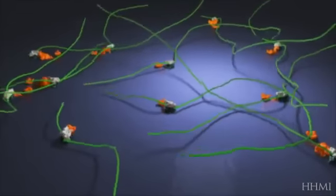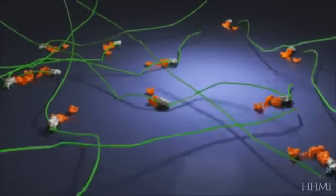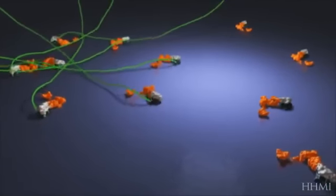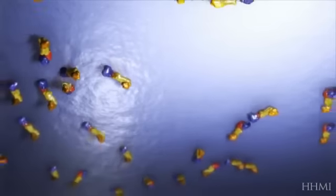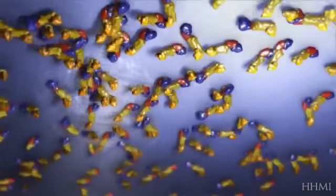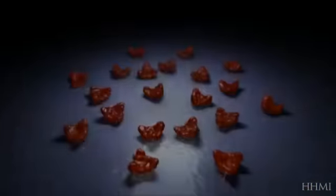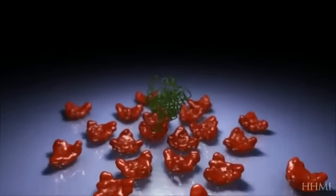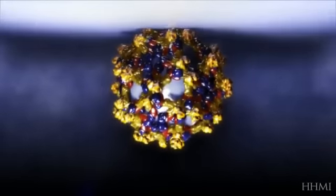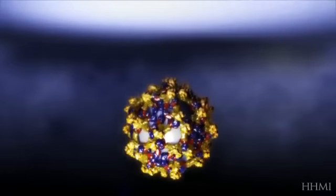Some of these strands are translated to make more viral proteins. Eventually, enough proteins are made to assemble new viruses. The envelope proteins aggregate in the lumen of the endoplasmic reticulum, and the capsid proteins aggregate on the cytoplasmic side. A viral RNA binds to the capsid protein and is packaged into a new virus particle as it buds off into the endoplasmic reticulum.